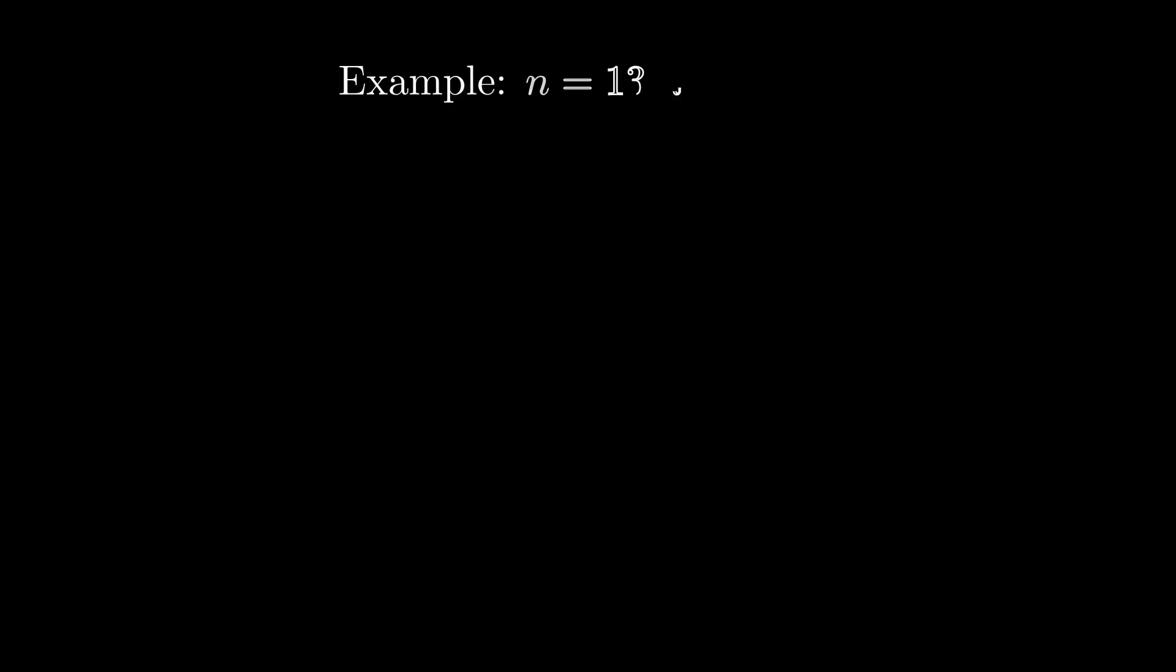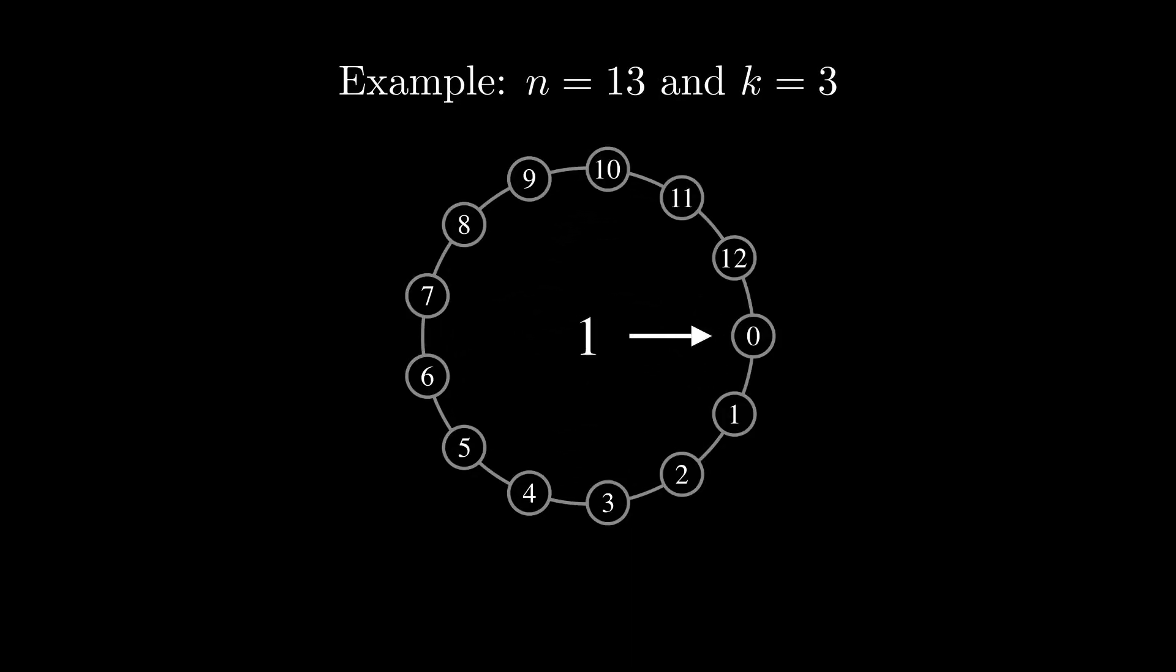Let us go through the toy example together. Here we have 13 rebels. What they're rebelling against? Who knows? All we know is they're trapped. Every third rebel is executed. The animation shows the order in which the rebels are killed. Finally, after the series of killings, the rebel at position 12 survives. Hence, Josephus(13, 3) is equal to 12.